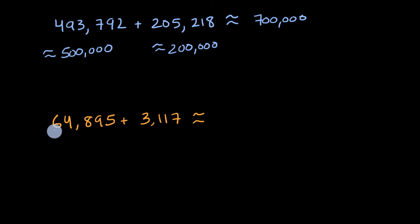So it might be tempting to round this number to the nearest 10,000, which would get you 60,000, and then round this number to the nearest 1,000, which would get you 3,000, and then add them together, you'd get 63,000. But something feels a little bit off there. Because you wouldn't expect 64,895 plus 3,117 to be less than 64,895.